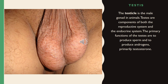The testis is the male gonad in animals. Testes are components of both the reproductive system and the endocrine system. The primary functions of the testis are to produce sperm and to produce androgens, primarily testosterone.